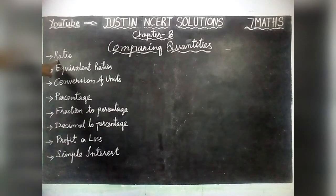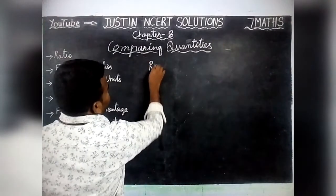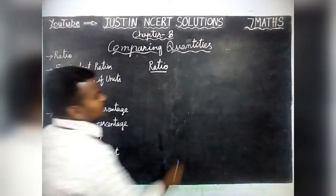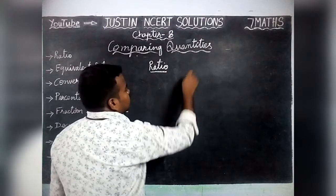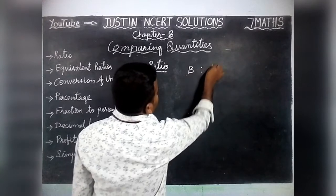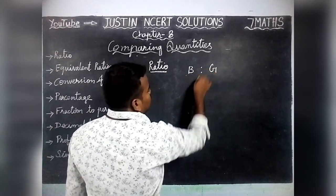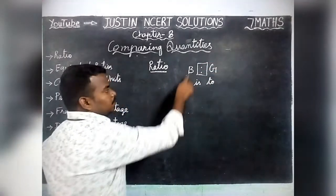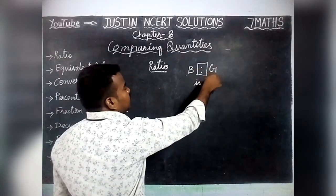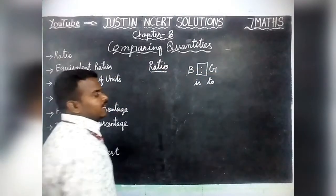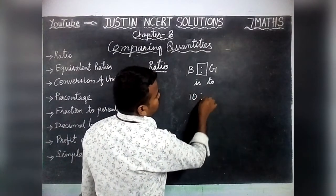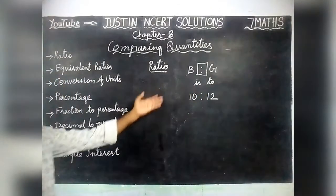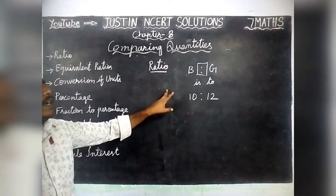Now we are going to see the first one: Ratio. The meaning of Ratio is comparing two quantities. For example, Ratio between Boys and Girls in 7th Standard. This symbol is called the 'is to' symbol — Boys is to Girls. We can say that 10 boys, 12 girls — 10 is to 12. That is called Ratio.